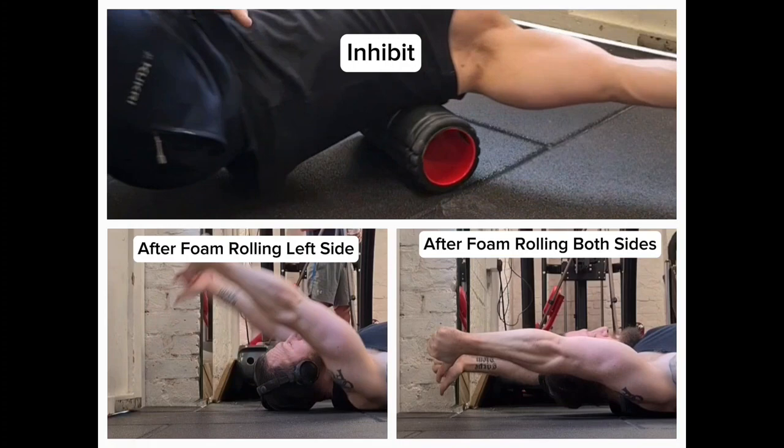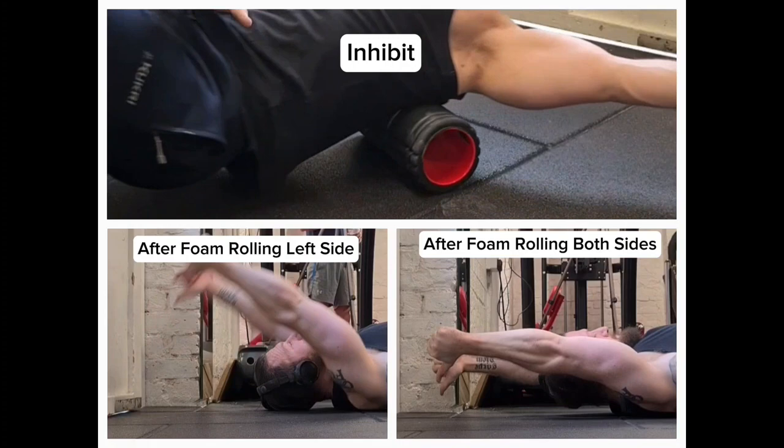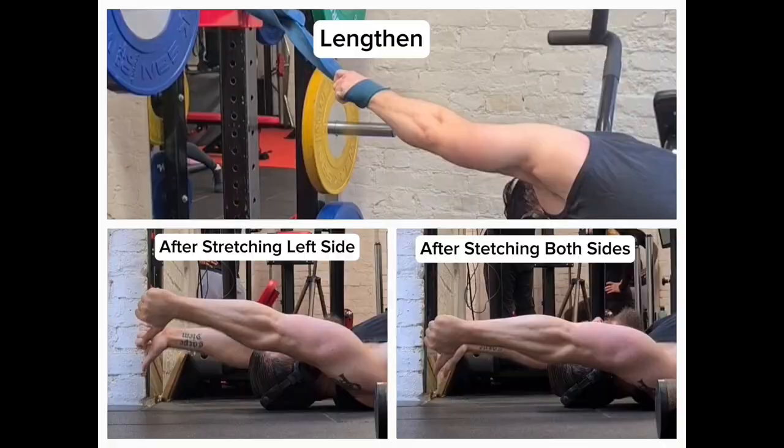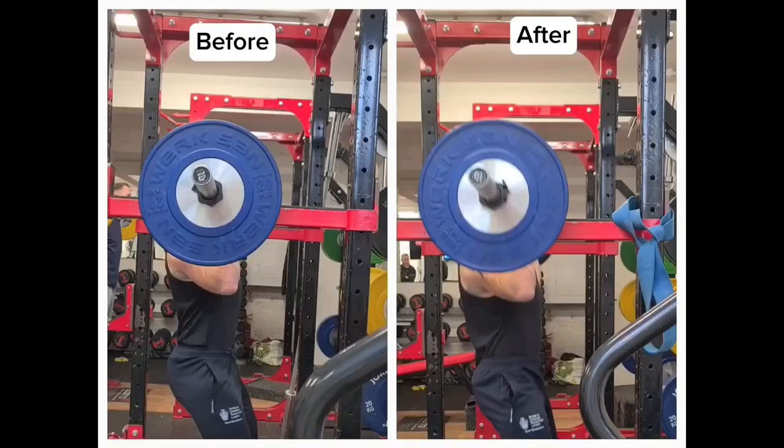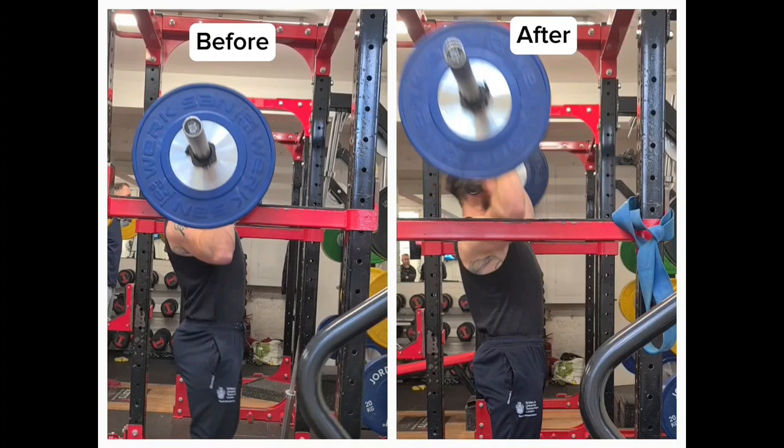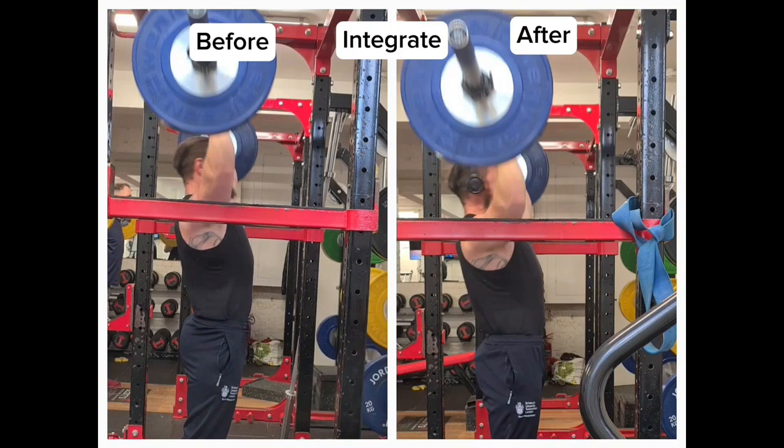The activate phase incorporated the trap free raise, and the integrate phase returned to overhead pressing. There were little visual improvements, but the lockout phase felt slightly smoother. This is likely due to the technique and posture being very ingrained, and this will be a long-term fix, but the improvements in flexion retesting indicate that we are on the right track.